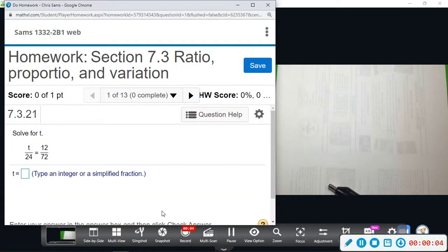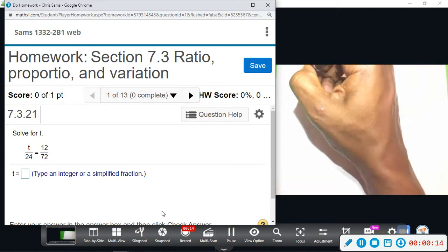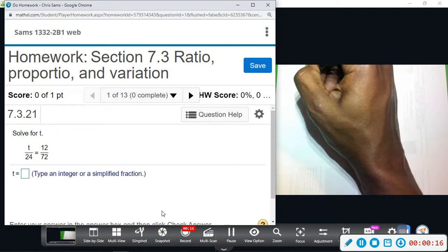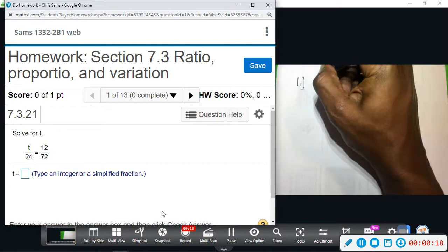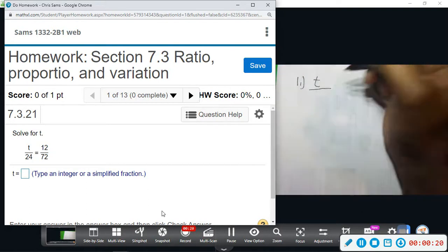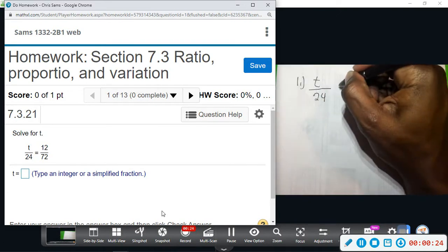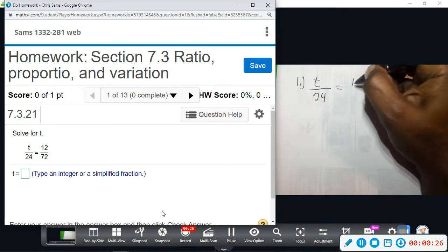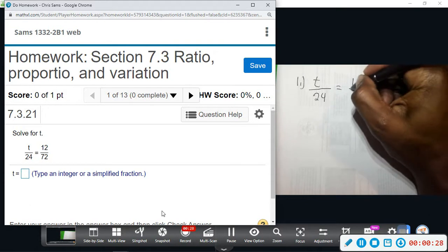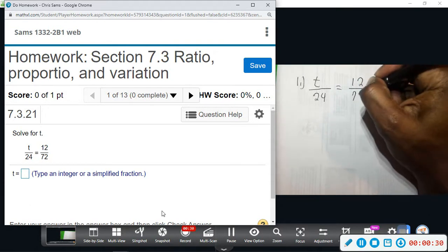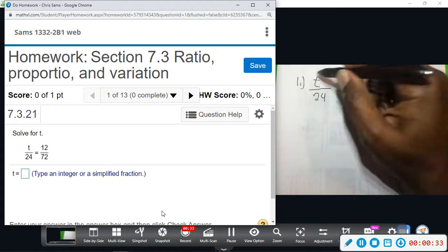All right, section 7.3: ratio, proportions, and variation. To solve a proportion, you just have to isolate the variable. This first one we have t divided by 24 equals 12 divided by 72. A lot of people would want to cross multiply, and you can do that, but it just adds a step.